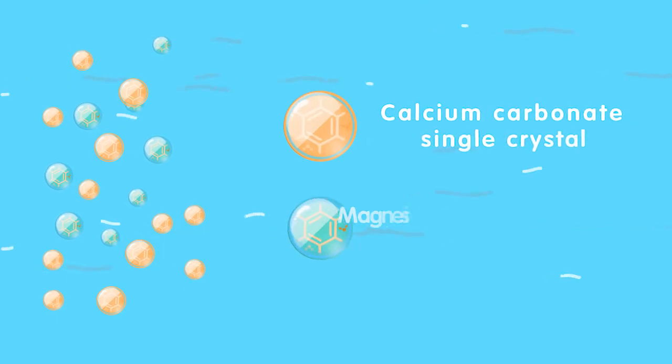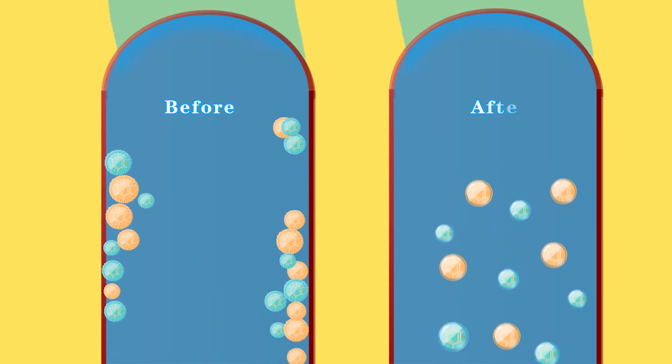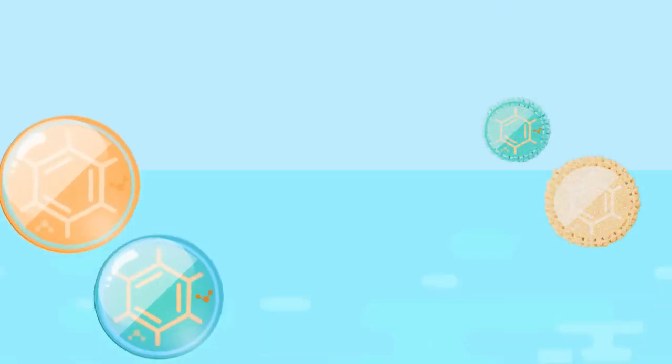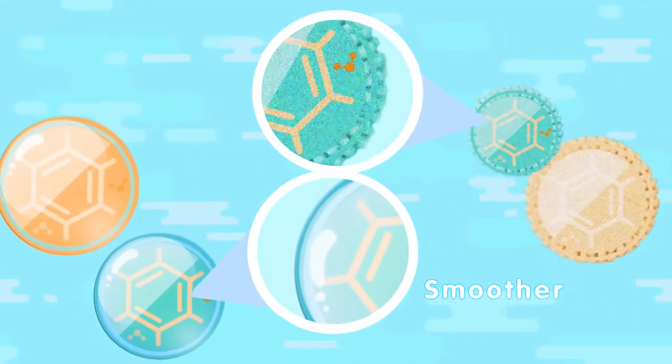They precipitate out and form small single crystals of calcium and magnesium carbonate. This kind of crystals will stay in the water most likely instead of stick to any surfaces, since the crystal texture is smoother compared to the natural calcium and magnesium carbonate.